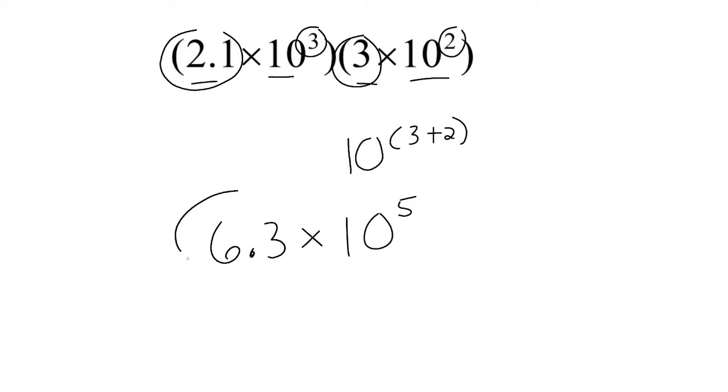And this is actually our final answer. Notice that this coefficient here follows the rules of scientific notation, which states that you can only have one digit in front of that decimal, a 1 through a 9. So our answer is 6.3 times 10 to the fifth power.